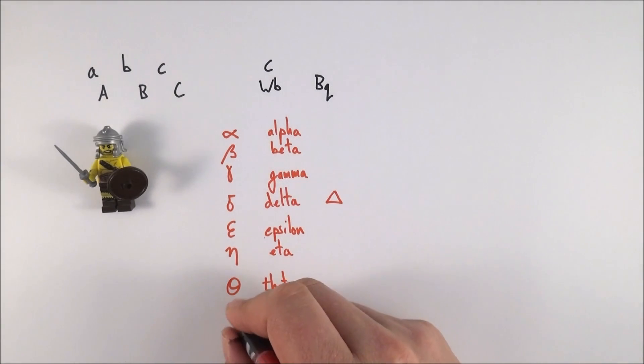After that there's another symbol which you might have seen beforehand, which is lambda. Lambda is often used for things like wavelength amongst many other things.